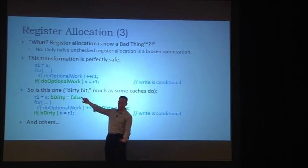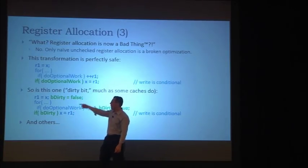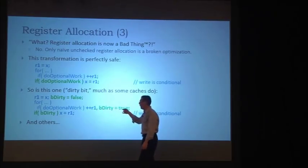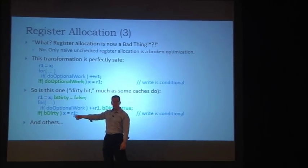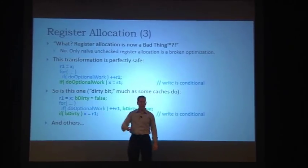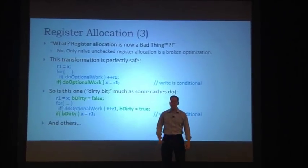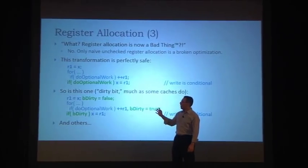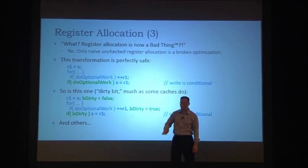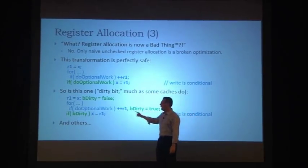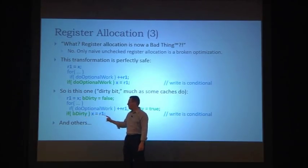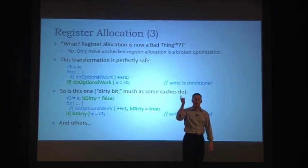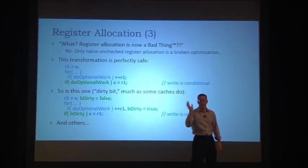Does this mean register allocation and all these important optimizations are a bad thing? No — it's just that making unconditional writes and injecting those is bad. In a compiler, you could unregister the loop variable and at the end say 'if do_optional_work, then write X out.' Or you can use a dirty bit: set dirty to true if you ever increment the register, then if you did, unload the variable. Another option: R1 = 0, ++R1, then if R1 > 0, x += R1.